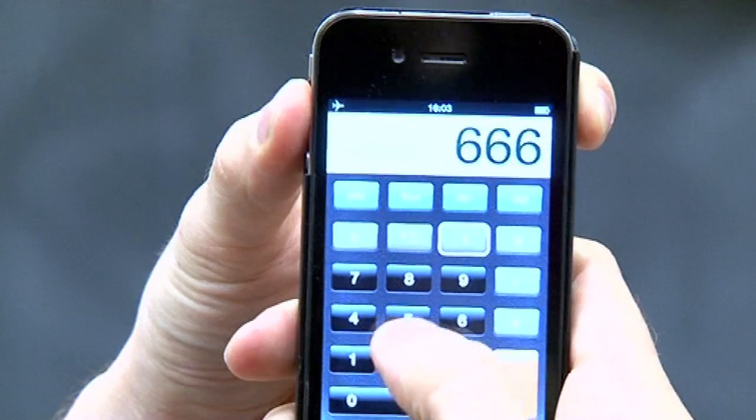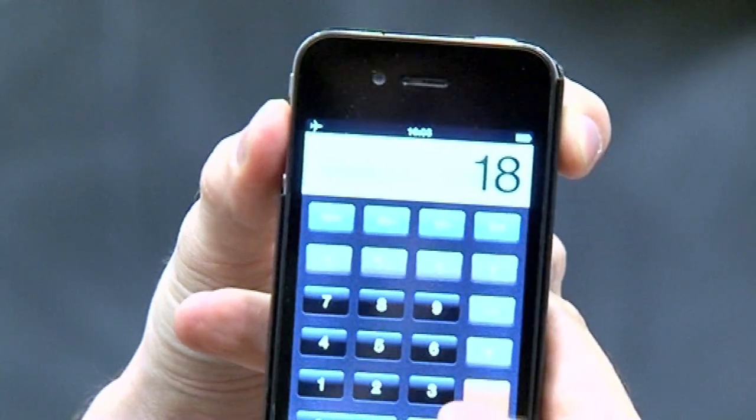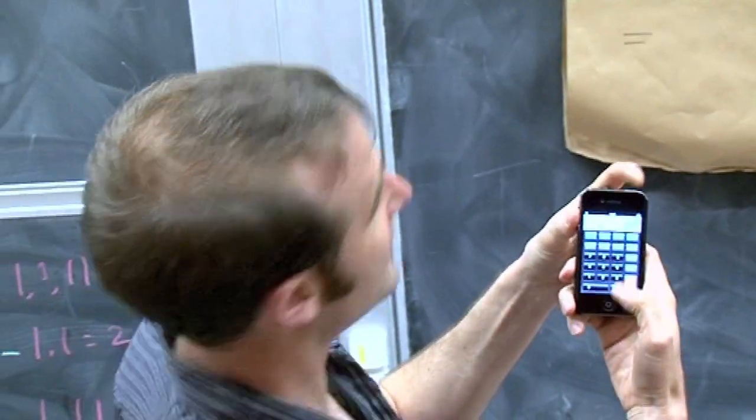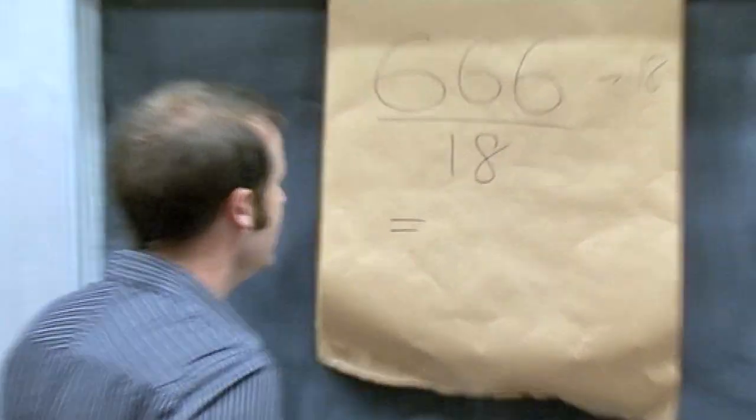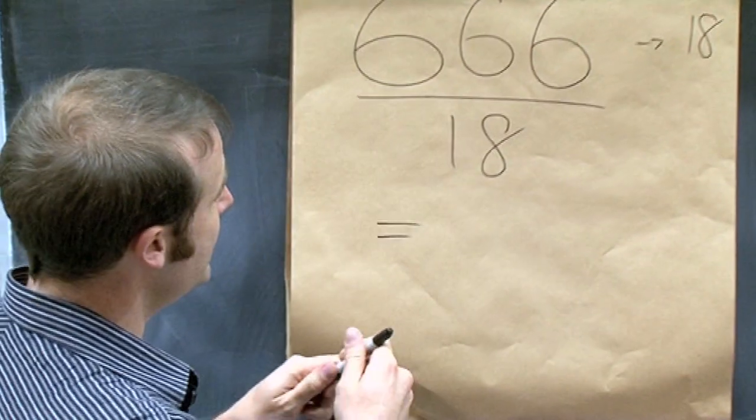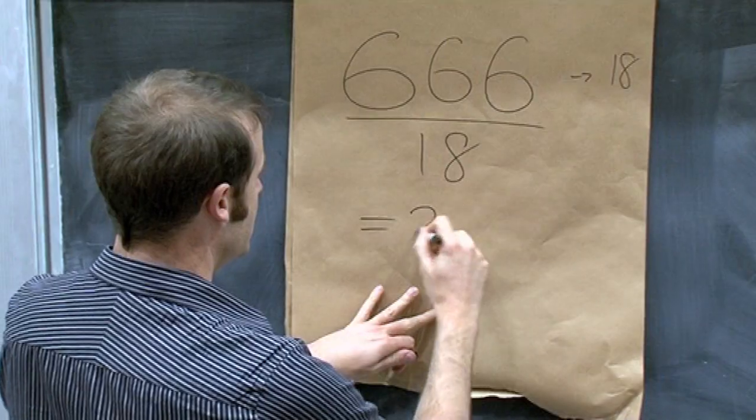And that equals, so if I put in 666, and then divide that by 18, it equals 37. Okay, so you happen to pick six, three sixes divided by the sum of those sixes equals 37.